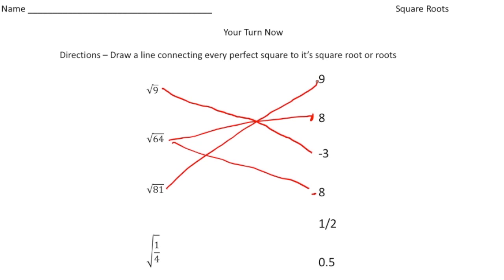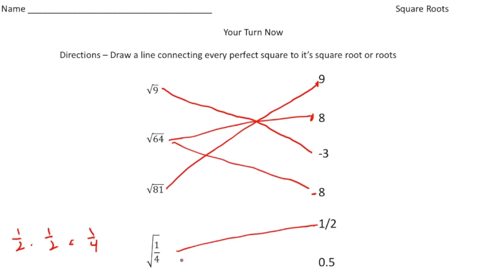Let's draw a line to nine — negative nine is not listed, that's fine. Finally, we have one-fourth. The square root of one-fourth is one-half, because one-half times one-half gives us one-fourth. We have the fraction one-half and also the decimal equivalent of one-half listed, so both of those are the answers. How'd you do?